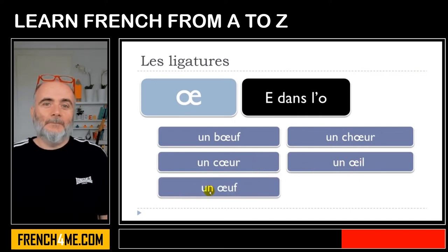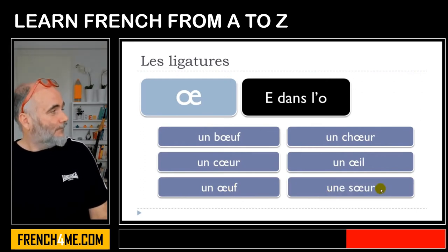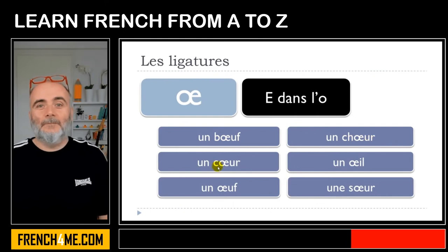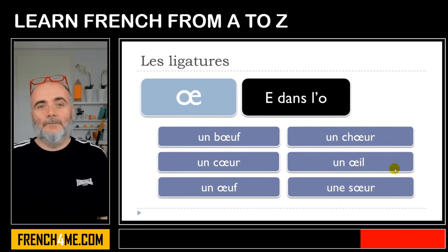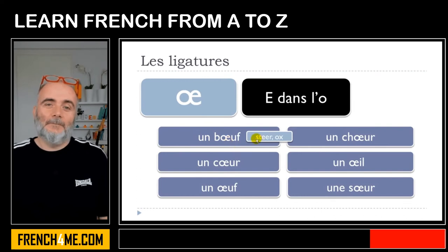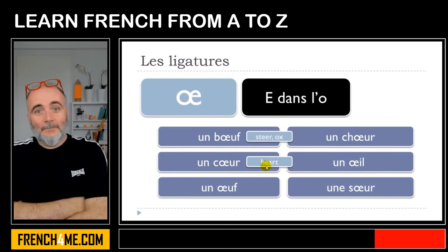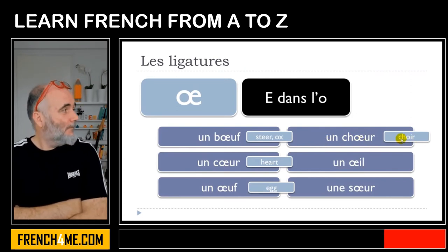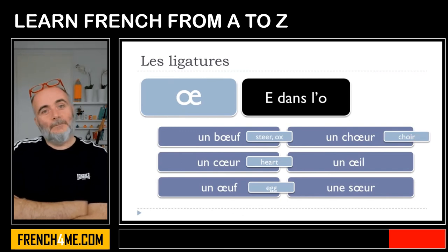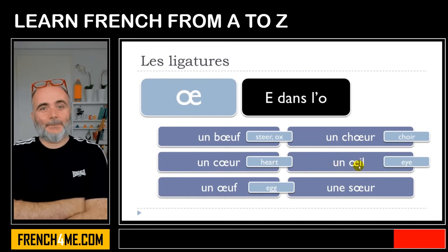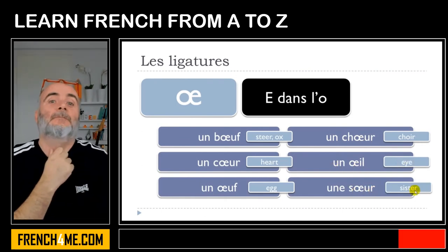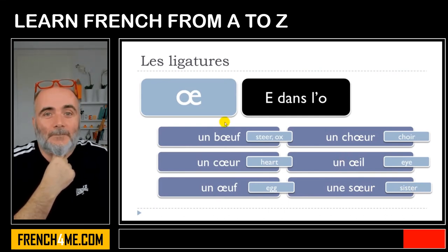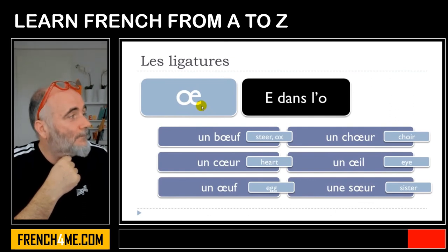More examples: un œil, un œuf, une sœur. These words are not that rare. Their meanings are: un bœuf (ox/steer), un cœur (heart), un œuf (egg), un chœur (choir), un œil (an eye), une sœur (sister). This letter is actually used more often than the previous one.